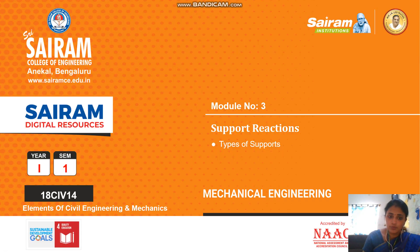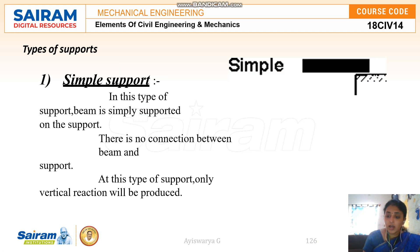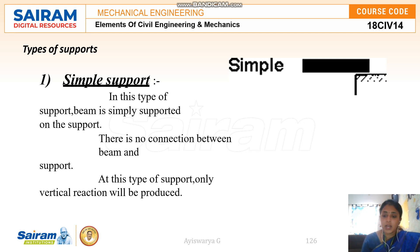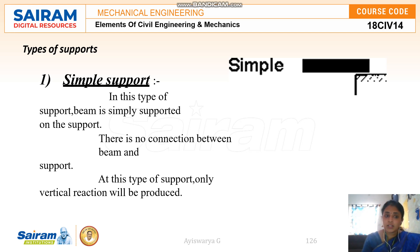These are all the varying types of supports I have been explaining to you. In the previous video, we were seeing about types of loads and types of beams. In the types of beams, you have seen simply supported beam — here also simply support is there, meaning both ends are supported and a vertical reaction is produced. You would have also seen other beams like fixed beam, cantilever beam, overhanging beam, and propped cantilever beam. These include beams that are one-end fixed and one-end hinged.